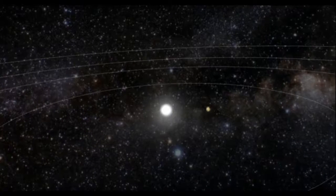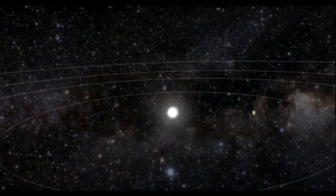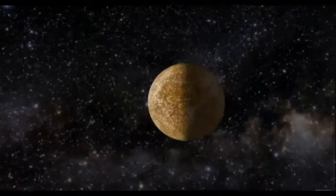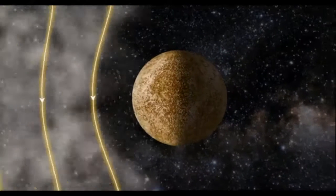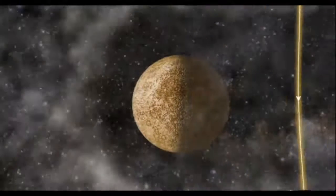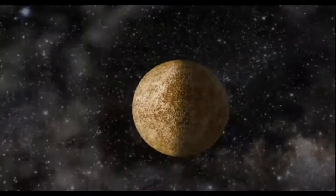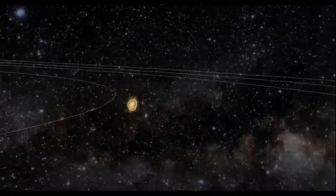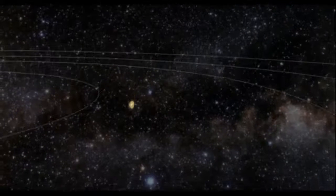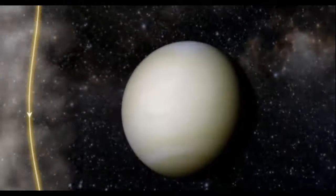The solar storm can reach speeds over 8 million kilometers an hour. After six hours, it blows past the planet Mercury. After 12 hours, the planet Venus.